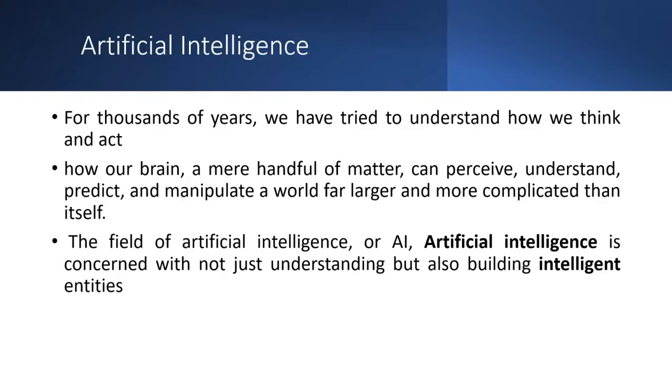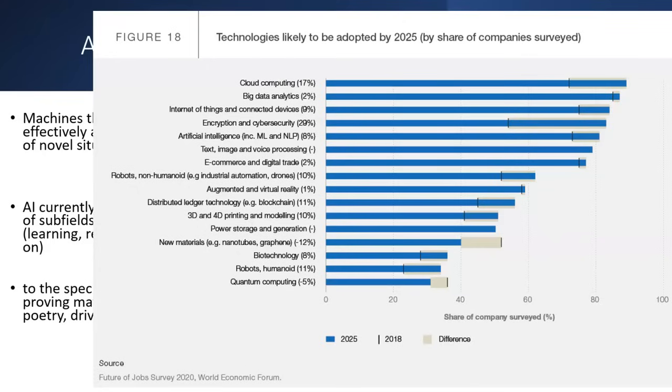The field of artificial intelligence is concerned with not just understanding but also building intelligent entities, like chatbots and expert systems. These are technologies which will adopt AI by 2025. The technology list includes cloud computing, big data, Internet of Things, encryption security, robots, 3D printing, and quantum computing. All of these will be equipped with AI, so learning AI is not an option — it's mandatory.